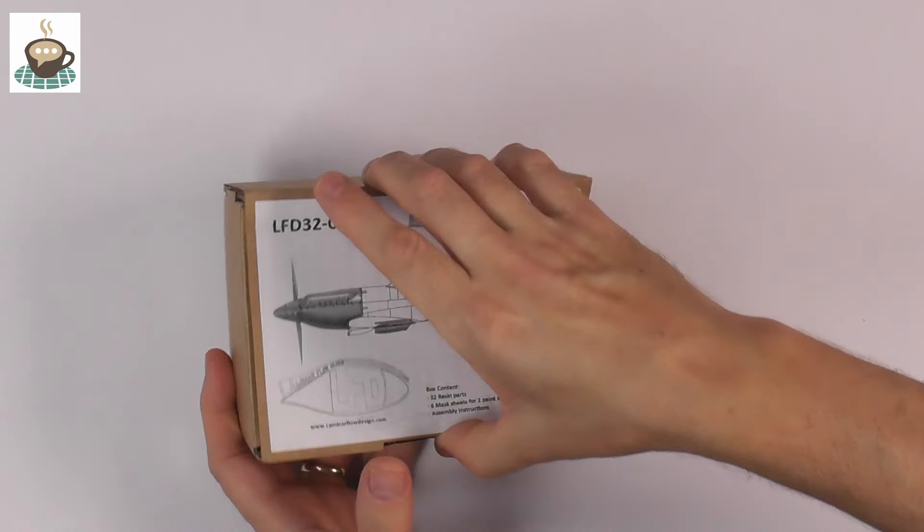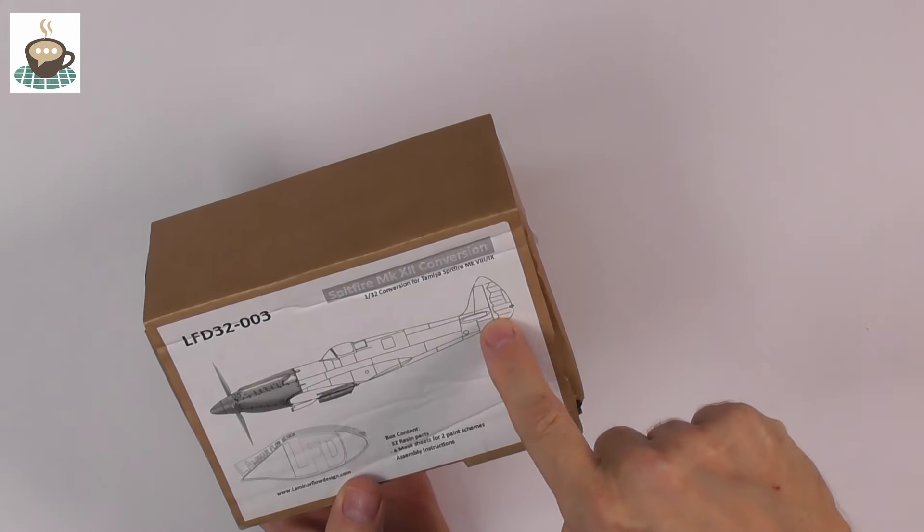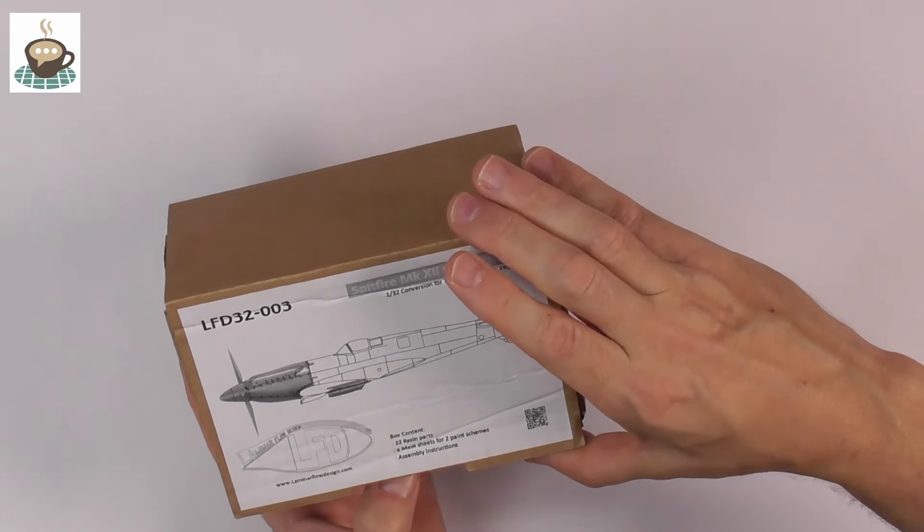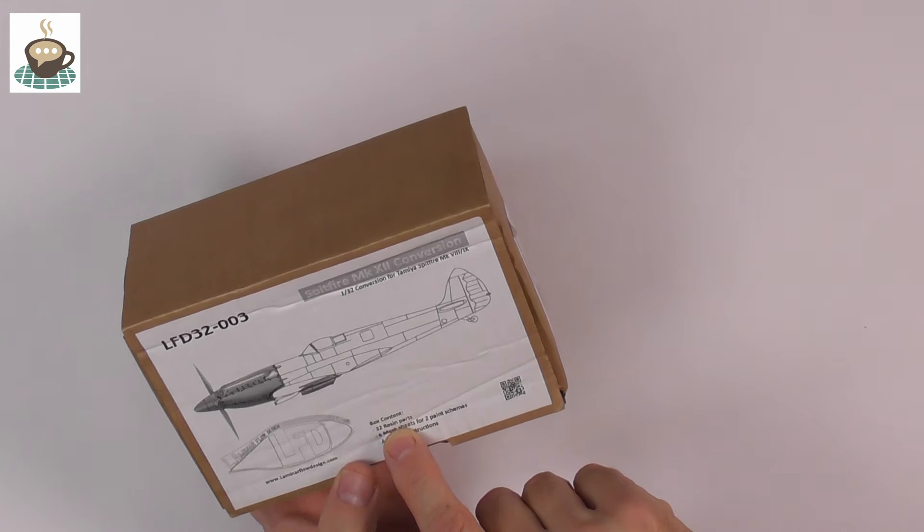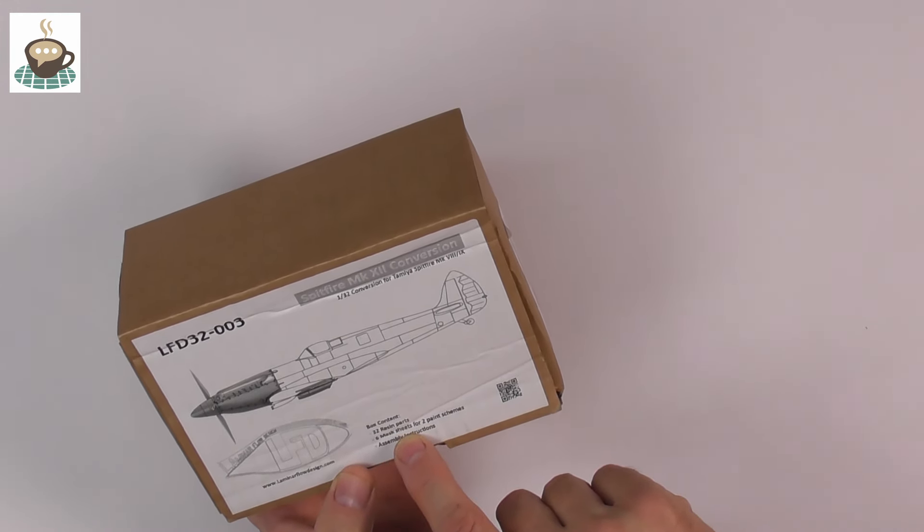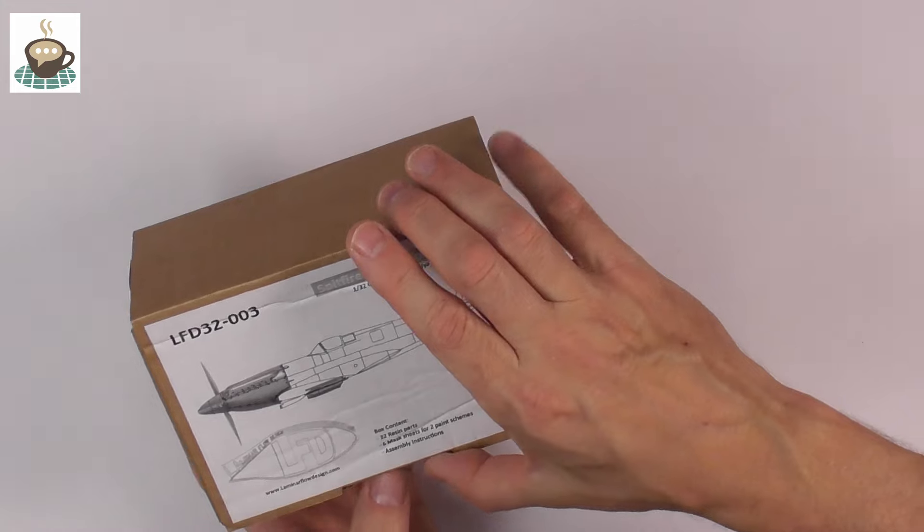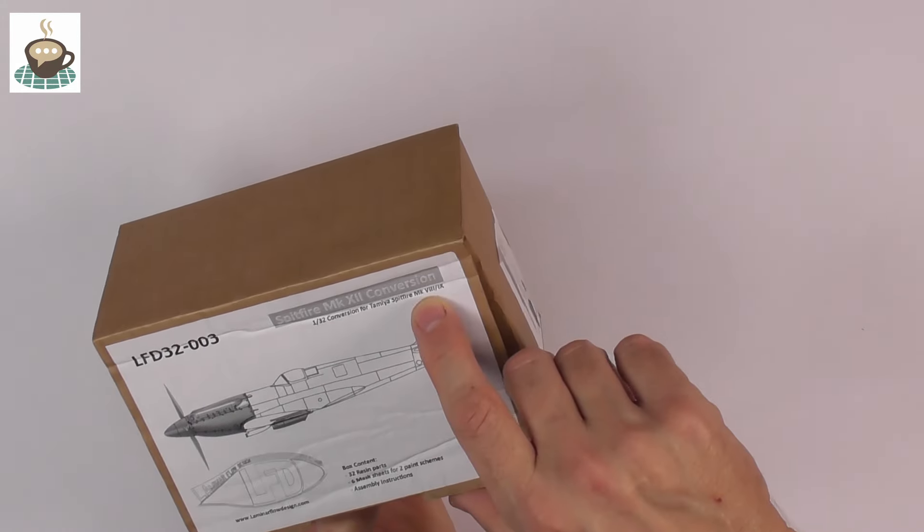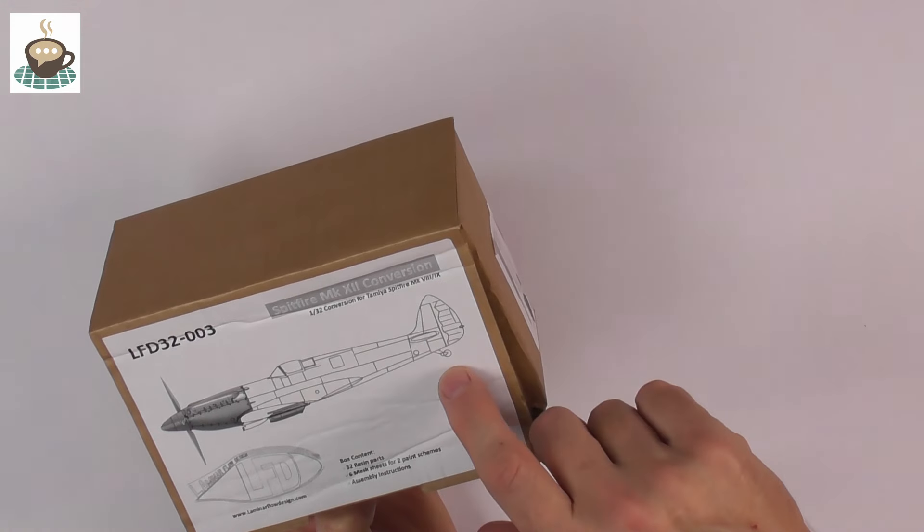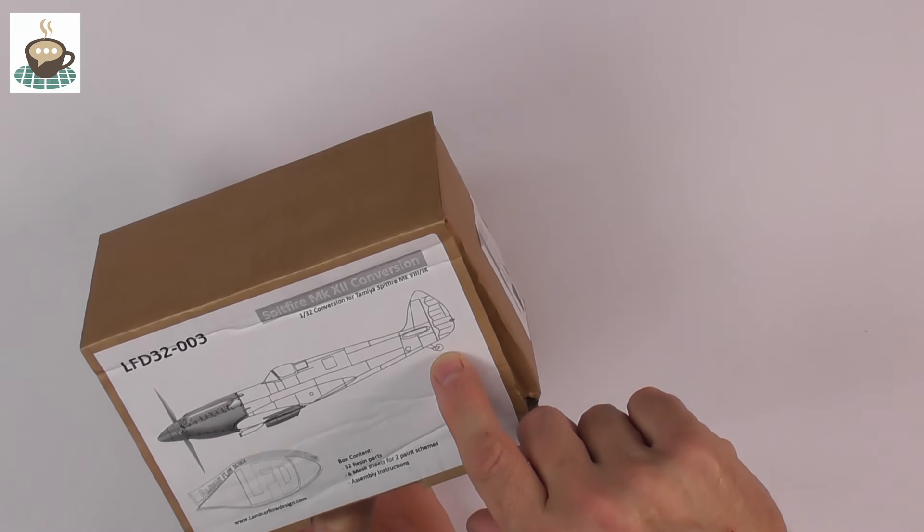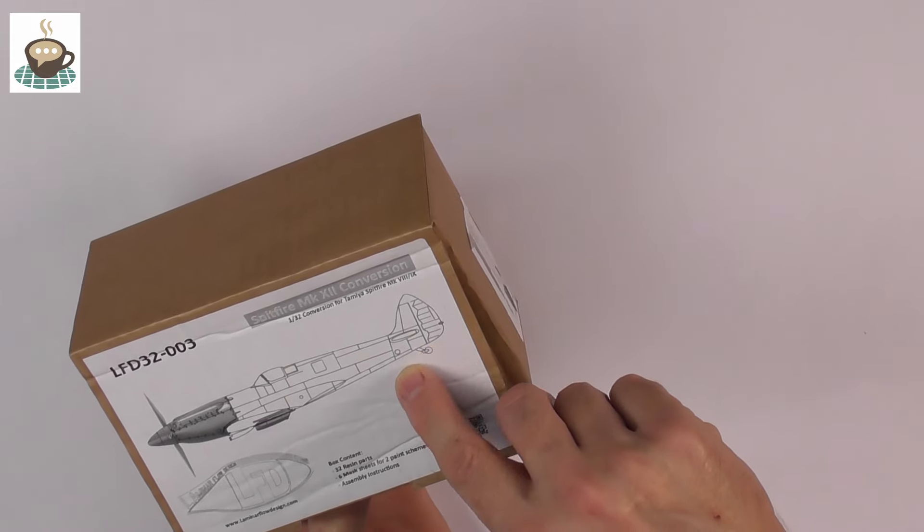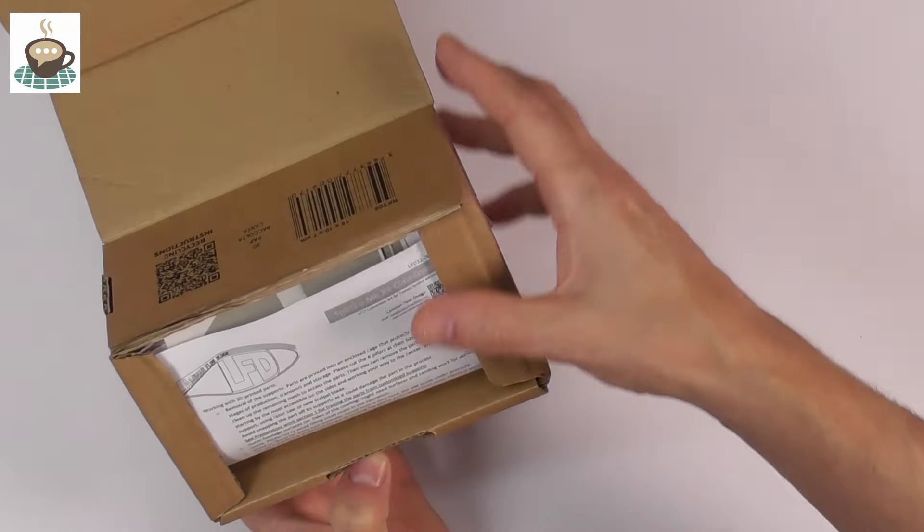Let's go to the bench. Here's the box, brilliant nice and sturdy corrugated box with a really nice drawing on the side with the conversion parts shaded out. Says here 32 resin parts, six masking sheets for two paint schemes plus some assembly instructions. It is for the Mark 8 or the Mark 9. I do suggest the Mark 9 because the Mark 8's got the retractable tail wheel so that's going to be a bit of a pain.